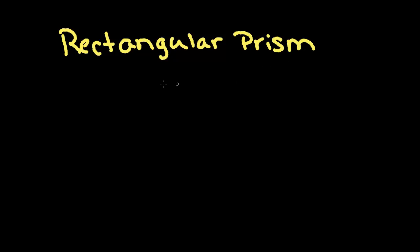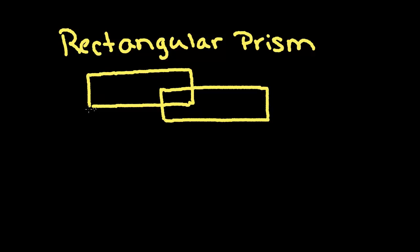All right, so first, let's take a look for a second at what is a rectangular prism. A rectangular prism is exactly what it says. It's the shape of a rectangle, but because it's a prism, it means it is a three-dimensional shape. So I'm doing my best here to draw a three-dimensional shape. It's a box, essentially, a rectangular box.